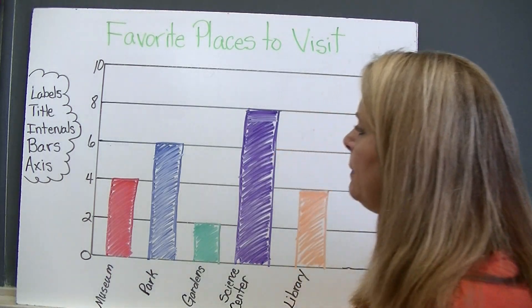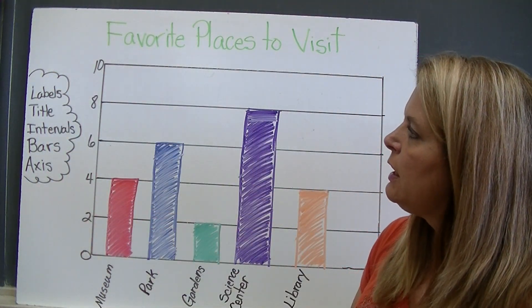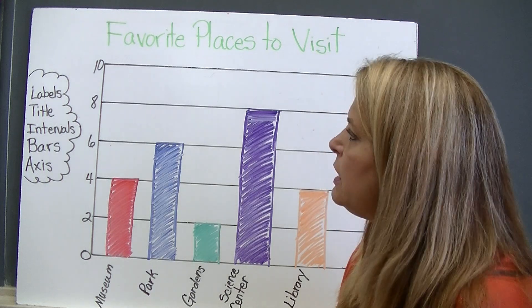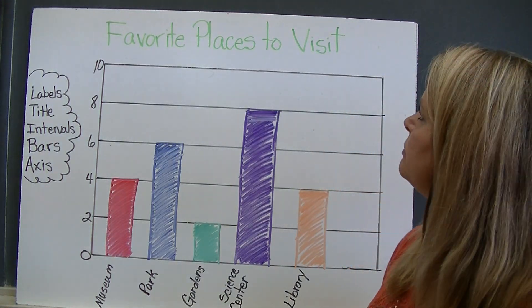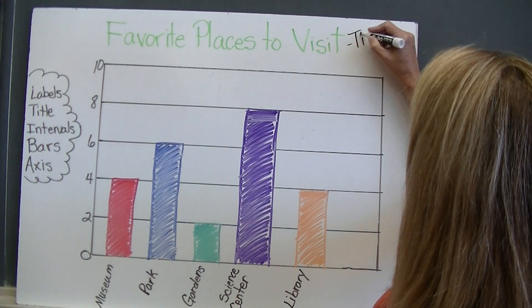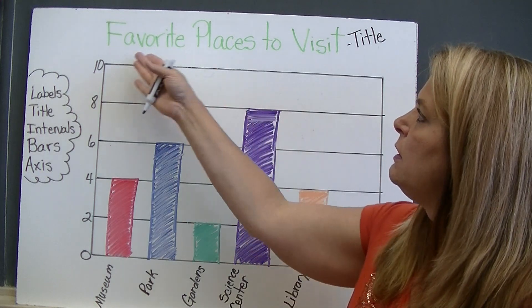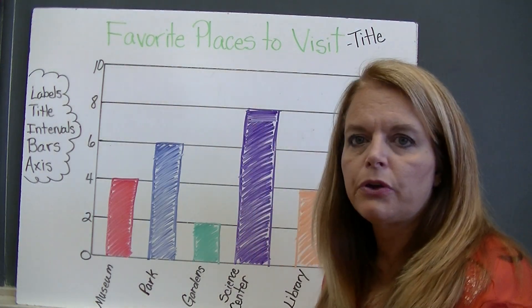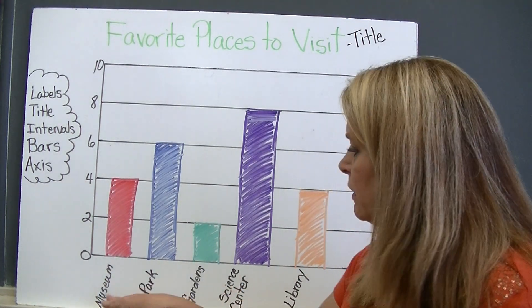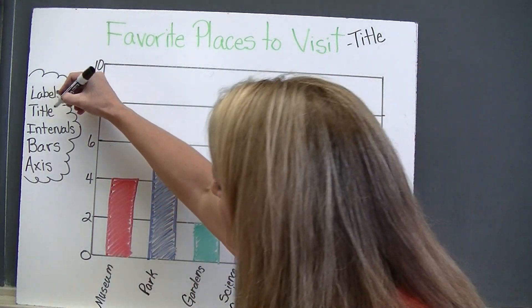Here I have a graph that I've drawn, and here are all of the parts that I need. So what's the first thing you look at when you look at any graph? The title. So what's the title of my bar graph? This one is "Favorite Places to Visit." This is my title — it's at the top. This tells me that this bar graph is going to talk about favorite places to visit. Somebody went out and asked a bunch of people what their favorite place to visit was, gave them some choices, and we collected some data. We've got the title — check that off.